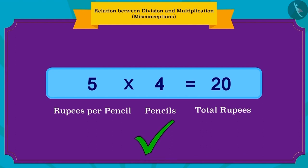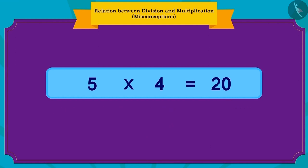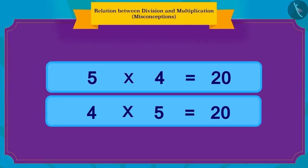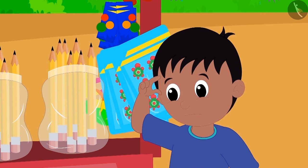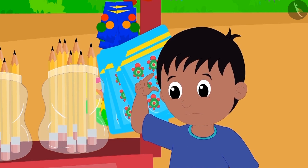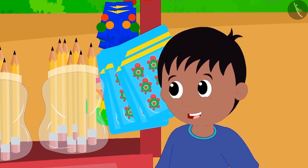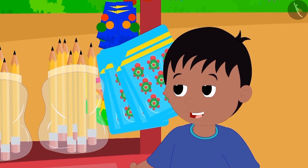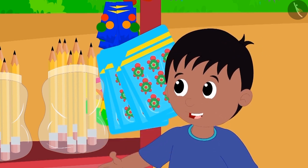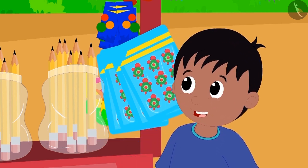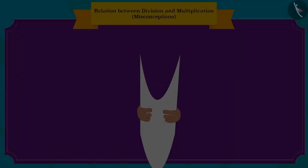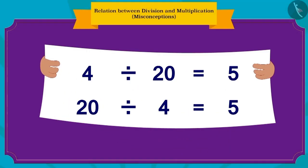Children, has Raju written it correctly? Yes, he has! Raju has written this correctly. We can write any kind of multiplication in two ways. Then Raju thought that he can also write division in two ways because of the relation between division and multiplication.